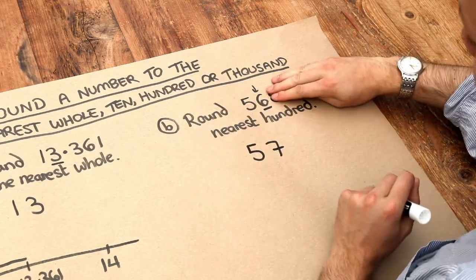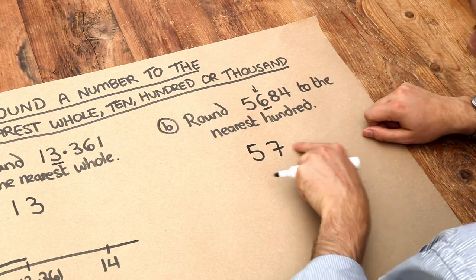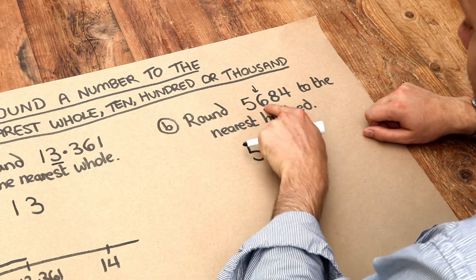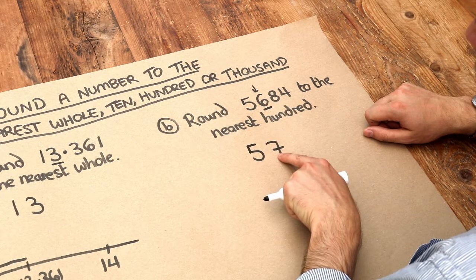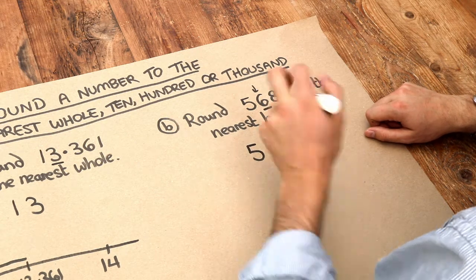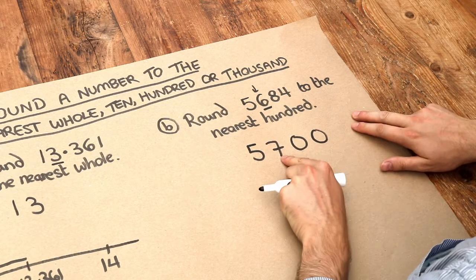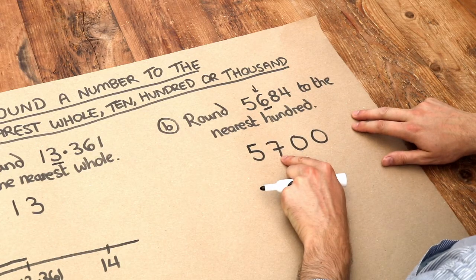Now I did say we've discarded everything after it, but the trouble is if I write nothing after it, then this digit here would no longer be the hundreds digit. So we still need to fill these in with zeros to make sure that this digit here is still the hundreds digit.